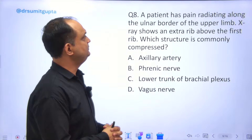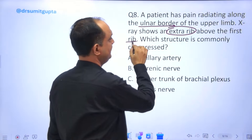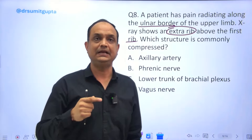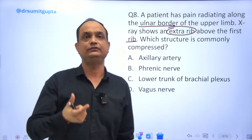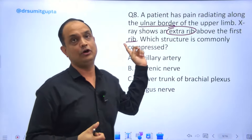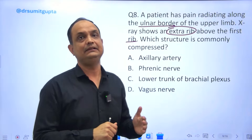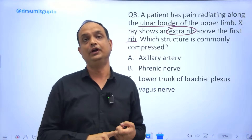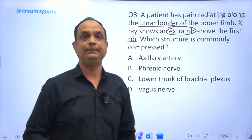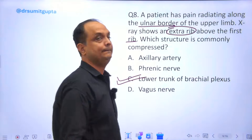A patient has pain radiating along the ulnar border of the upper limb, showing an extra rib above the first rib. In the cervical region there are no ribs — ribs start from the thoracic region. But sometimes from C7 an abnormal part of a rib is present, known as a cervical rib. That extra rib can compress structures on the superior surface of the first rib — the subclavian artery and lower trunk of the brachial plexus. Since the ulnar or medial border is supplied by C8 and T1, the answer is the lower trunk of the brachial plexus.